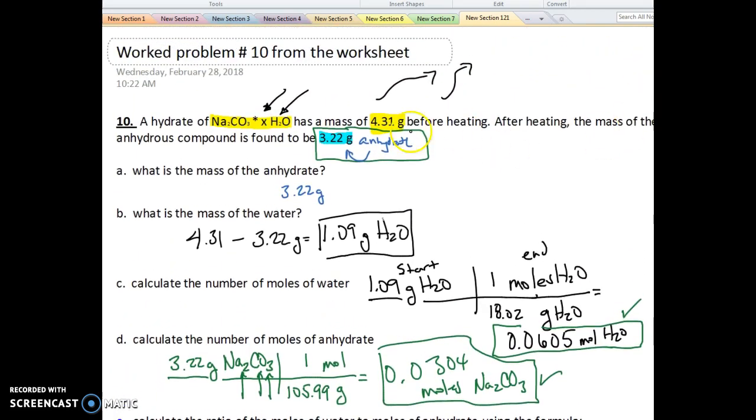so I'm going to kind of scroll back up here and talk about this once again. There's two values that we really need. We need the grams of our anhydrate, and we need the grams of our water, which we subtract. And if we know those two values, we can always convert them to moles, divide the moles of water by the moles of anhydrate, and then we can find the ratio and find the unknown x. Okay, so that's work problem number 10.